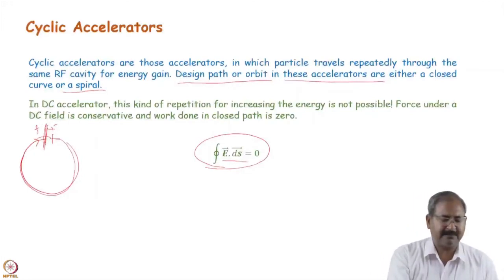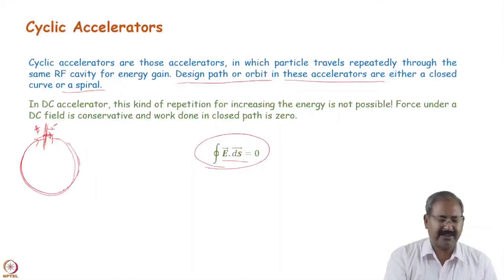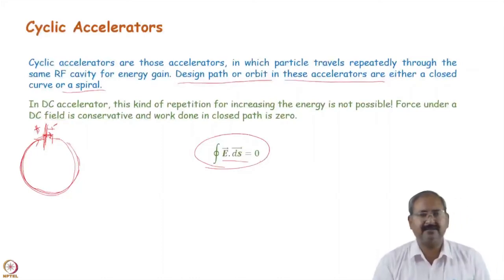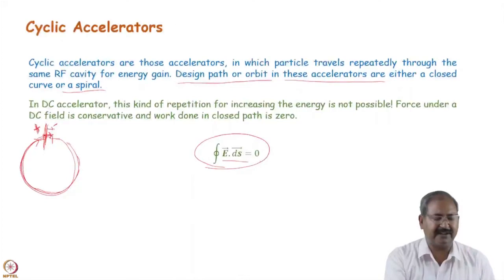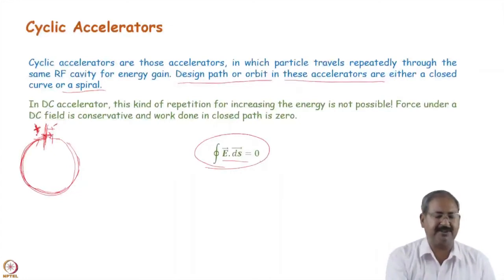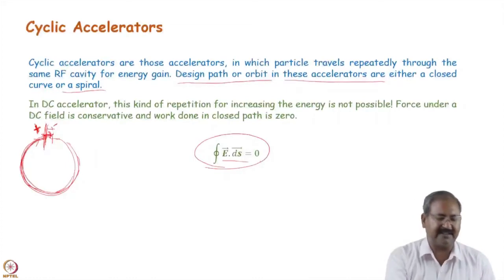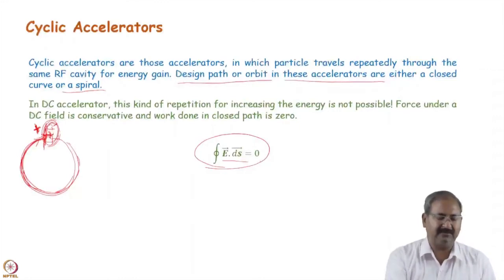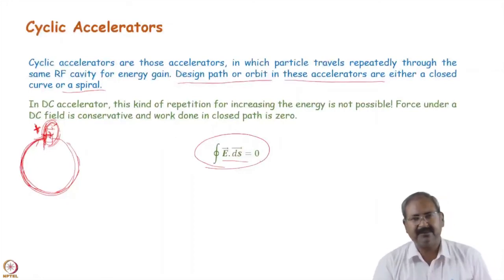This can be understood intuitively: suppose there is a higher positive potential and a lower negative potential. A positively charged particle accelerates toward the negative side, but to send it back through the DC field again, it must climb back to the positive potential, losing exactly the energy it gained. So the energy gained inside is lost in the cycle. To solve this we need a non-zero field only when the particle crosses the gap and zero field elsewhere — which is only possible with a time-variant field. Cyclic accelerators are therefore built using time-variant fields only.